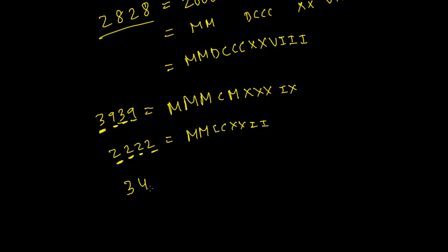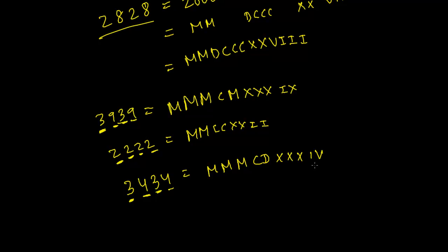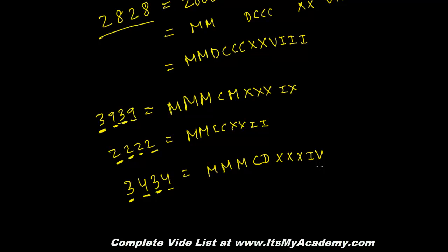Let's write 3434. The 3 represents 3000, so write MMM. The 4 represents 400, which is CD. The 3 represents 30, so write XXX. The 4 represents four ones, which is IV. So 3434 is MMMCDXXXIV. Practice more examples on your own. Feel free to comment or message me with questions — and please subscribe to the channel!